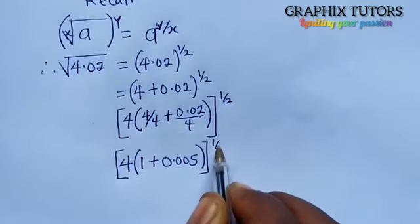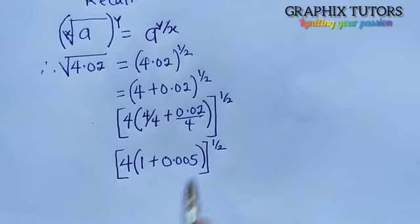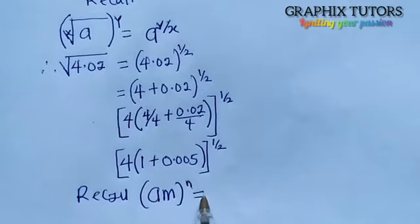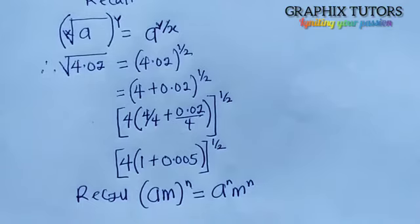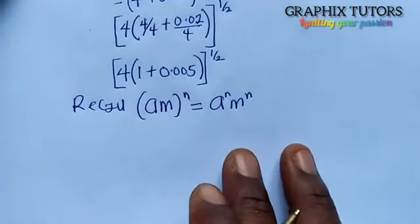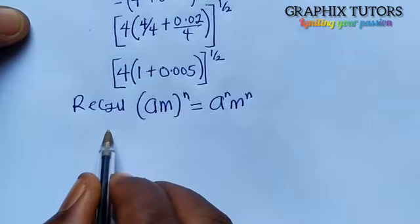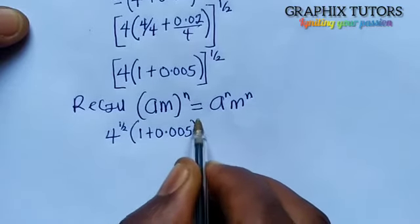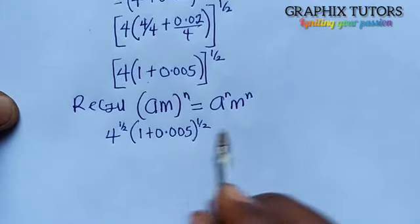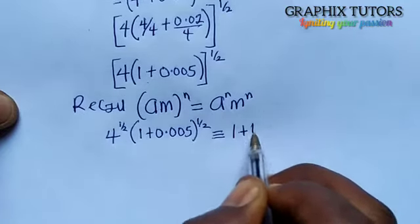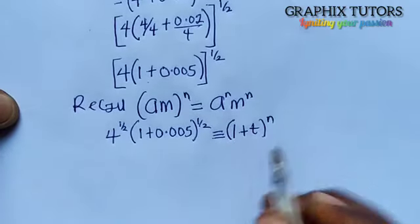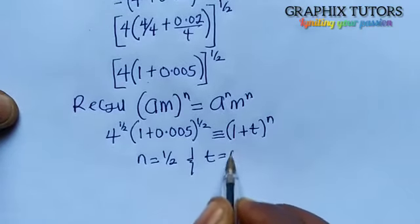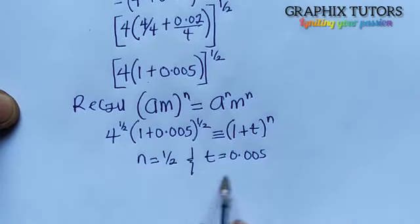Recall that (a^m)^n = a^(mn). So this becomes 4^(1/2) times (1 + 0.005)^(1/2). Comparing with (1 + t)^n, we identify n = 1/2 and t = 0.005.